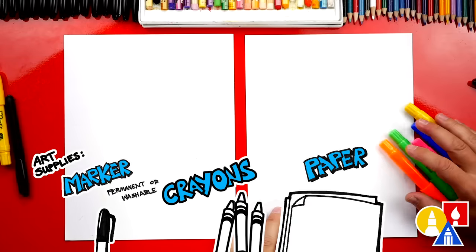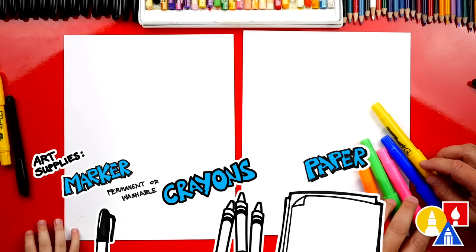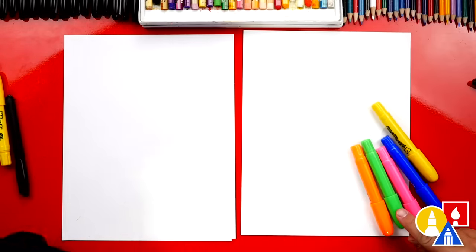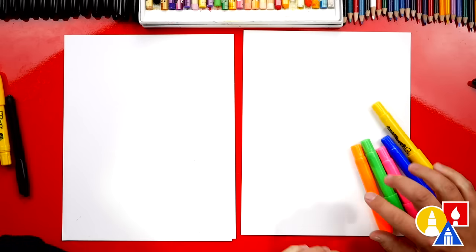We're gonna use crayons. We have a bunch of colors. We're gonna use yellow, blue, what's this color? Pink. Pink. Green. And? Orange. Orange.